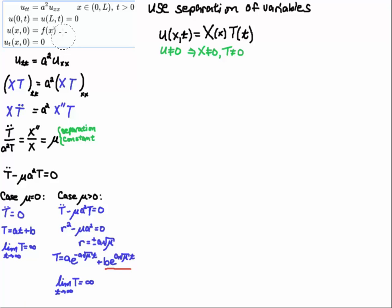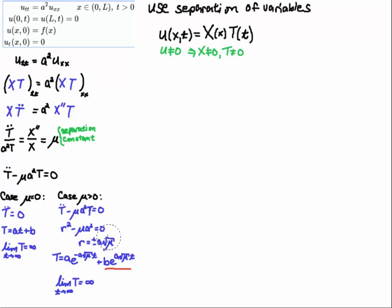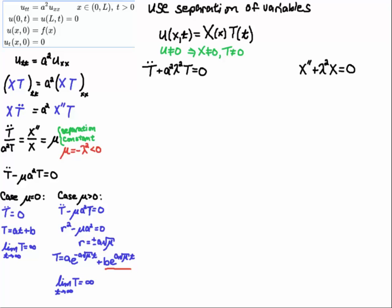This can't be the case because it wouldn't satisfy the boundary conditions. Note that t is greater than zero, as we interpret little t as time. When mu is greater than zero, I set up the characteristic equation for this ODE and get a sum of real exponentials. One term blows up as t goes to positive infinity, so again capital T goes to infinity. We therefore proceed to the case where mu is less than zero.